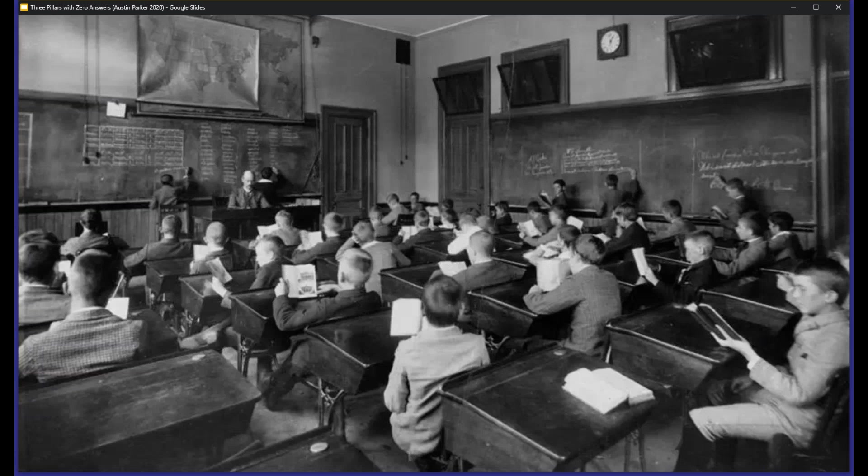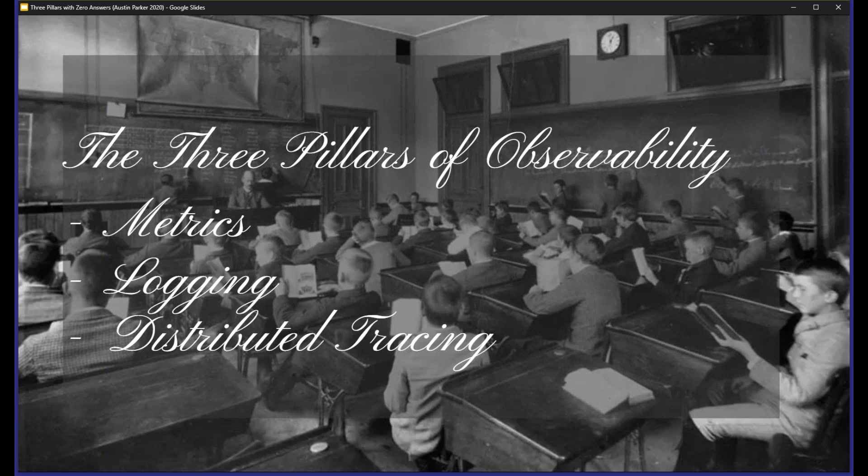This conventional three-pillars list is really dogmatic. You can read any number of blog posts that say: here's how you do observability — you get a metrics stack, you set up Prometheus, you get logging and indexing with the ELK stack, you get a tracing system like Zipkin or Jaeger. You put those in, wire them up with data, and you're done. Problem solved, right? I think the reality is a little more complex.